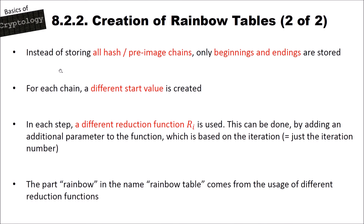Instead of storing all hash and pre-image chain values, we only store the beginnings and the endings of the rainbow table chains. This decreases the storage size needed and allows us to store even bigger rainbow tables. For each chain, different start values are used, and in each step a different reduction function r_i is used. This can be done by adding an additional parameter based on the iteration number — so r1 for iteration 1, r2 for iteration 2, and so on. The word 'rainbow' in the name comes from the usage of different reduction functions, which Wikipedia even represents with different colors, making it look like a rainbow.